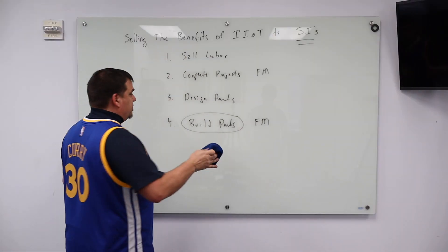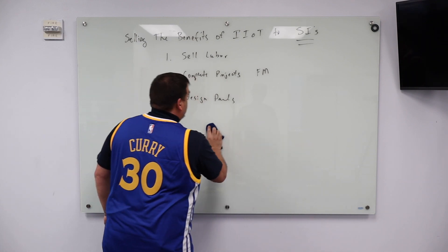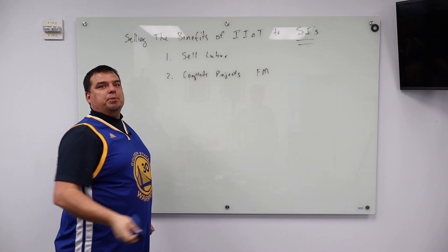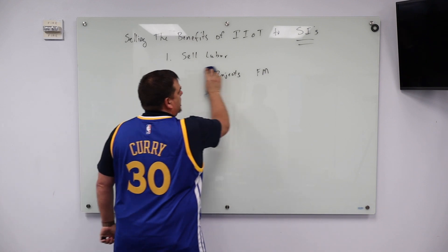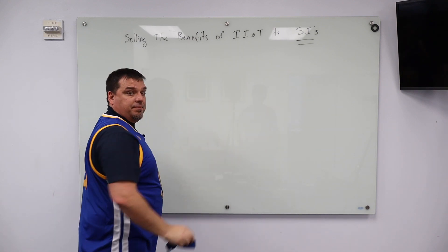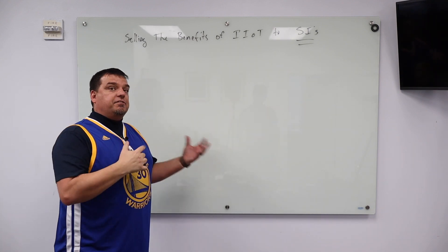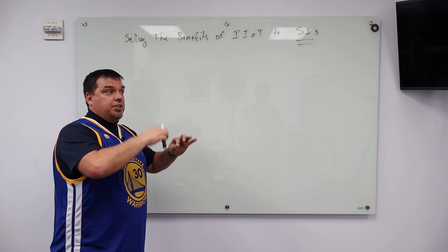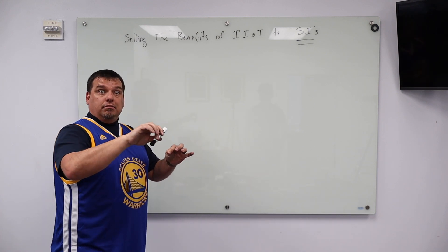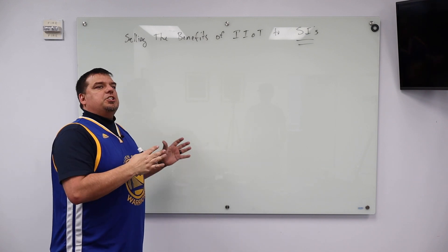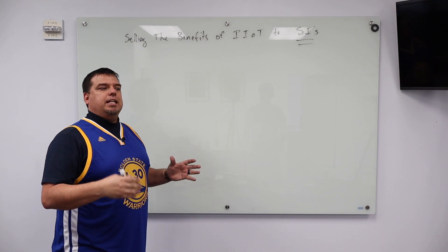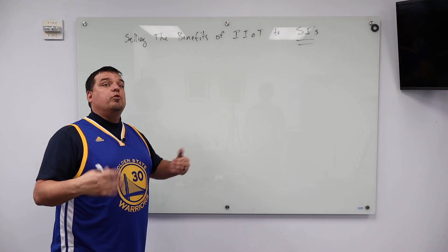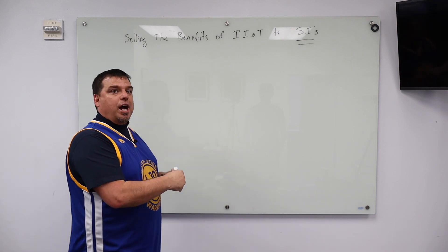So the value proposition for the SI is that IIoT makes doing this much, much easier. By using protocols like MQTT and by using stateful protocols that are report by exception, that is they're publishing from the edge as opposed to polling devices on the edge. It makes it much easier for a systems integrator to create a project that they can sell over and over and over again. This is the value prop for an SI.